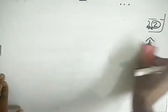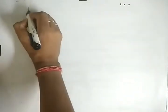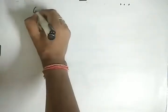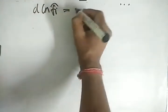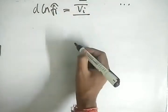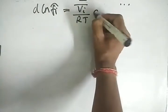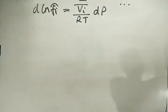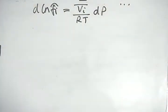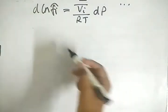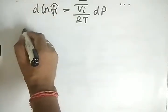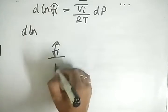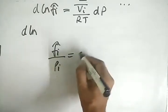Rearranging, we get d(ln fi-cap) = (Vi-bar / RT)·dP, where Vi-bar is the partial molar volume. This is pretty much the same approach we used for pure materials. Recall that for pure substances we found φi using a similar expression.